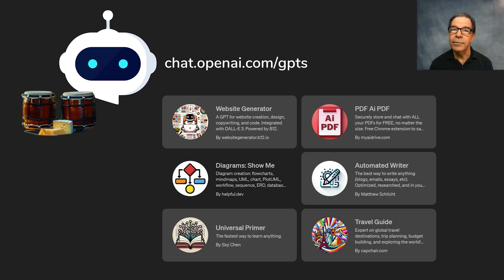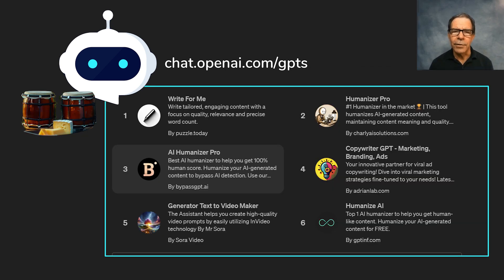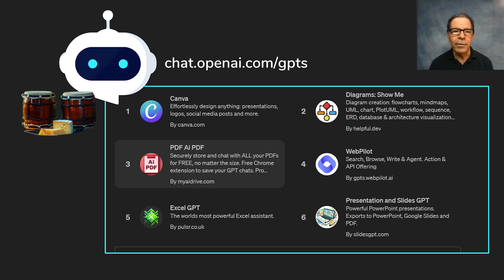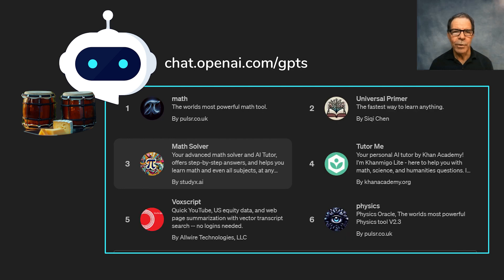Here are ones that are featured. Here are ones that help with writing. Here are ones that help with productivity. Ones that help with education, and many others. But how do we do that, exactly? What are the steps?